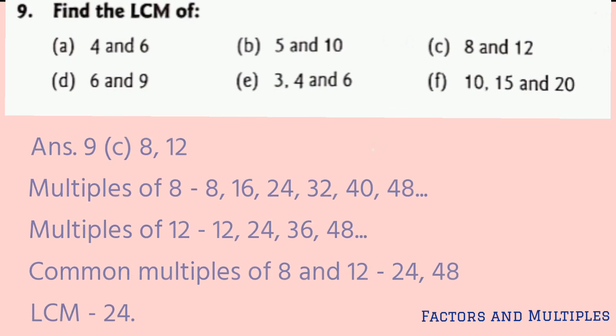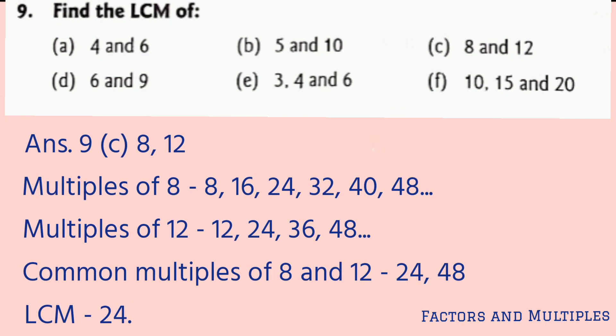Part c: 8 and 12. After writing the multiples of 8 and 12, we get 24 and 48 as the first 2 common multiples of 8 and 12.